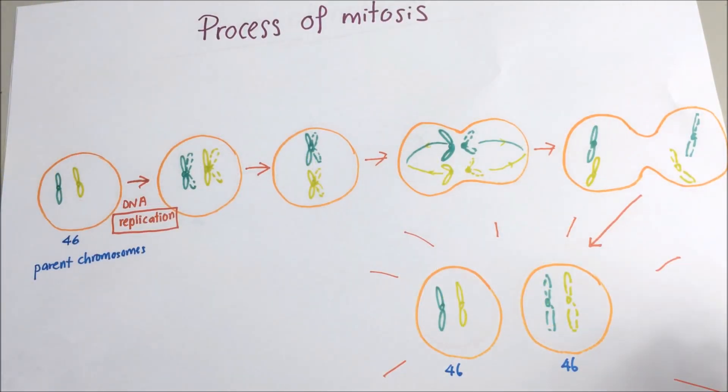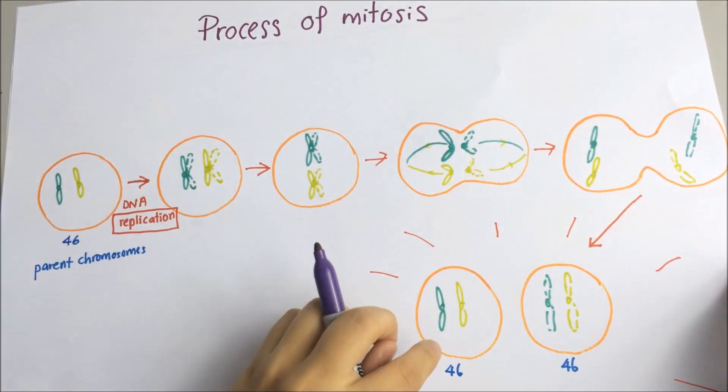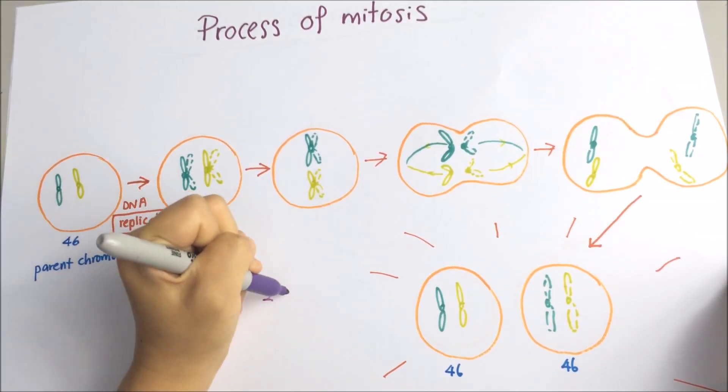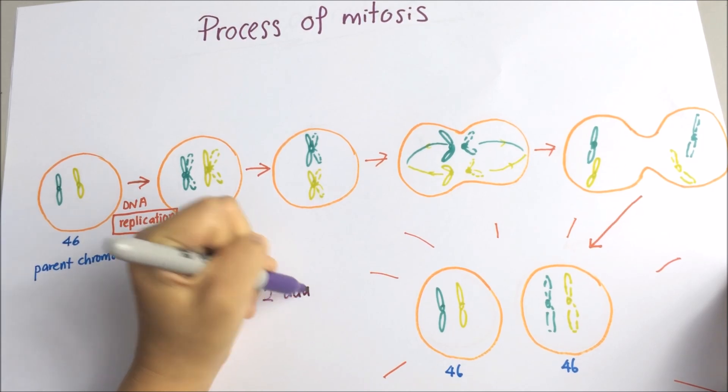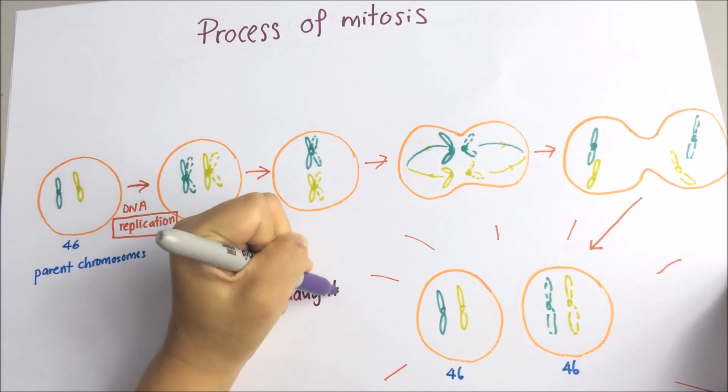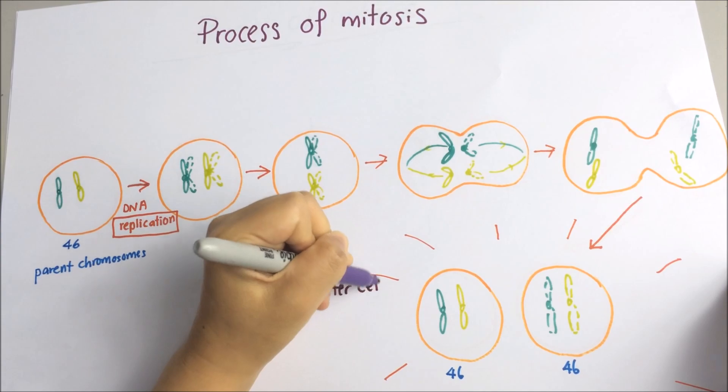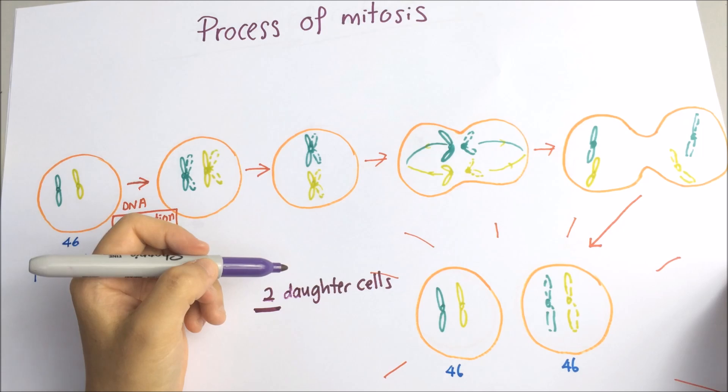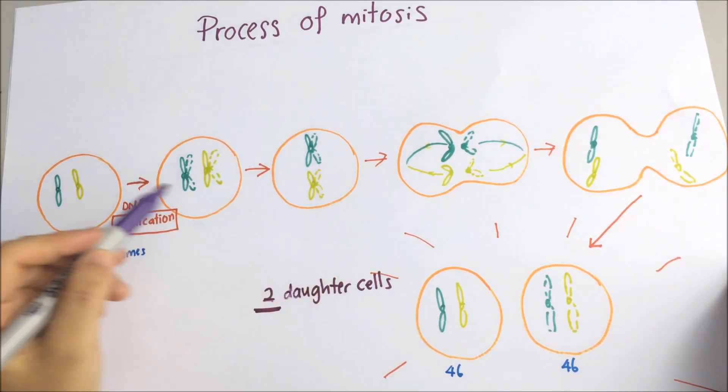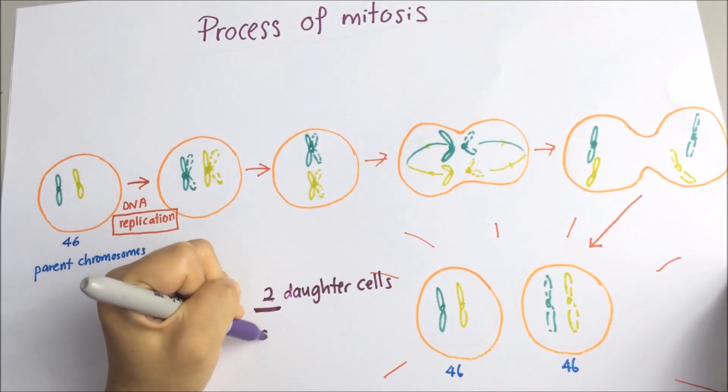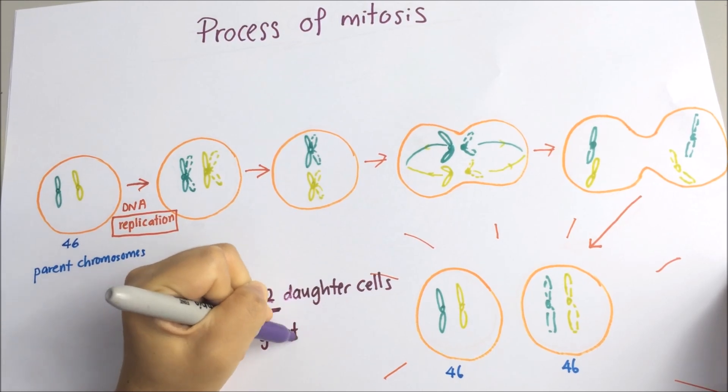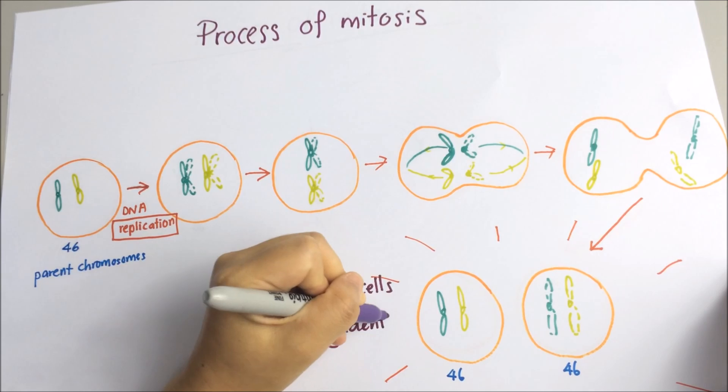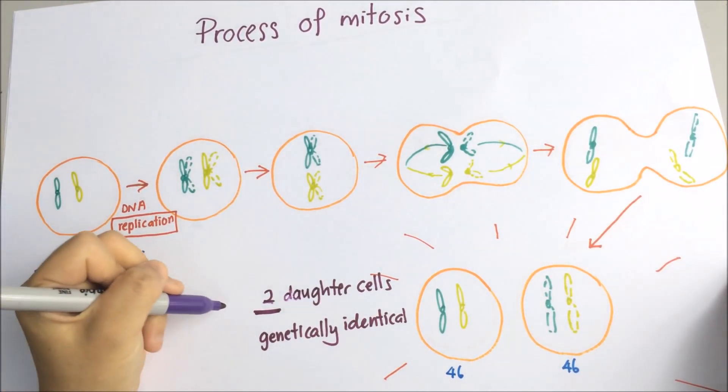So remember, the aim of mitosis is to produce two daughter cells which are identical to the parent cells. So the chromosome number is maintained as 46, and this is important for the normal functioning of the cell.